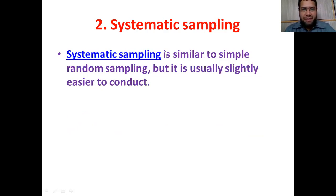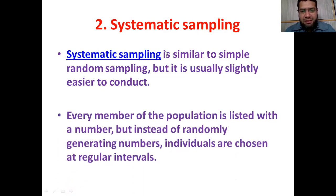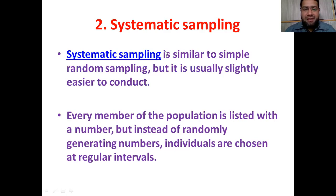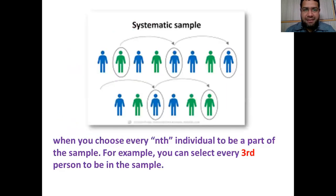The second type is systematic sampling. Systematic sampling is similar to simple random sampling but is usually easier to conduct. Every member of the population is listed with a number, but instead of randomly generating numbers, individuals are chosen at regular intervals. For example, with 1,000 employees, I select the 1st, then the 5th, then the 10th, then the 15th, then the 20th — choosing individuals at regular intervals. So when you choose every nth individual, for example every third person, this is known as systematic sampling.